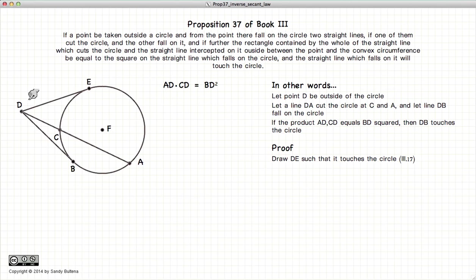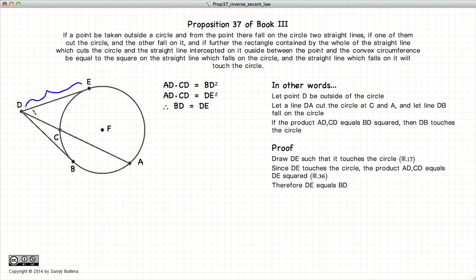According to Proposition 36, that means that this distance, DE all squared, will be equal to DA times DC.